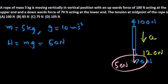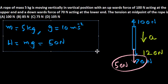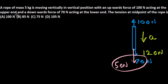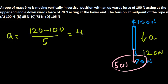And how to find that acceleration? Acceleration is the net force divided by mass. So you can calculate acceleration equal to 120 minus 100 divided by 5. That gives you 20 by 5, 4 meter per second square. So the rope is moving with an acceleration of 4 meter per second square in the downward direction.